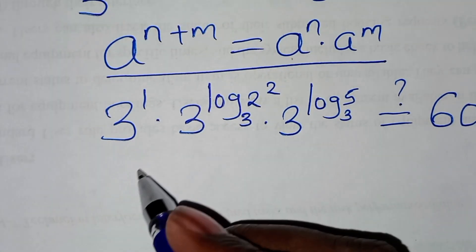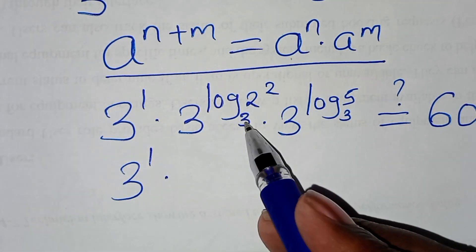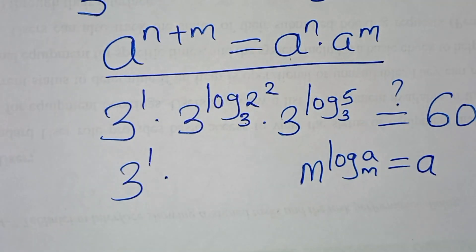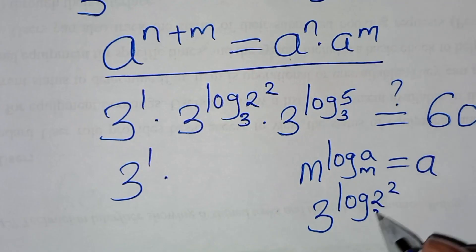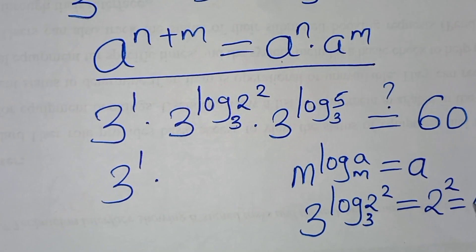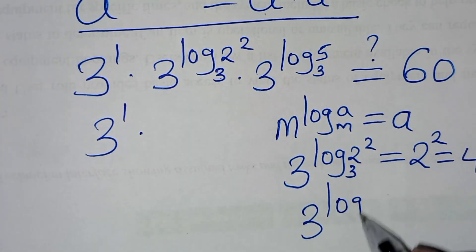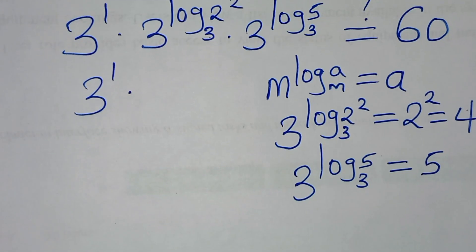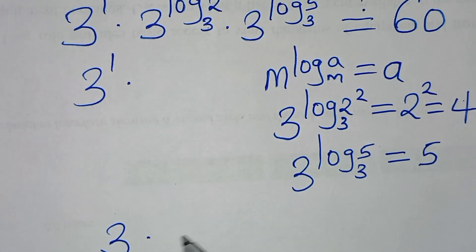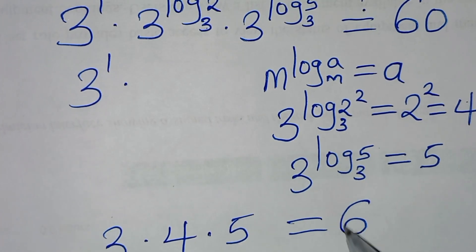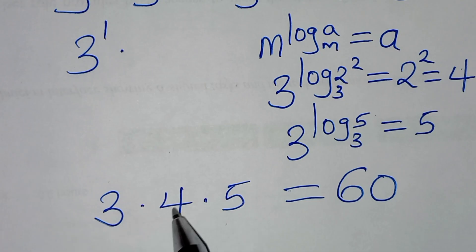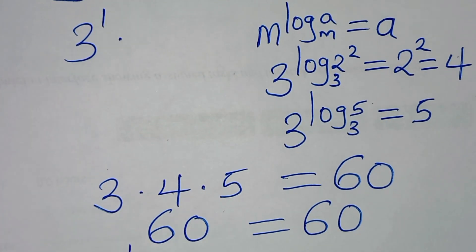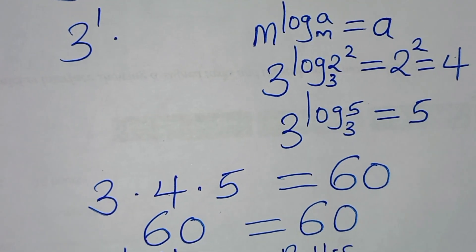Now, 3 to the power log base 3 of 2 squared and 3 to the power log base 3 of 5 are in the form of m to the power log base m of a, which essentially gives us a value of a. So 3 to the power log base 3 of 2 squared equals 2 squared, which is 4, and 3 to the power log base 3 of 5 equals 5. Substituting 4 and 5, we have 3 times 4 times 5. So 3 times 4 is 12, times 5 equals 60, and this is equal to 60. So the left-hand side equals the right-hand side.